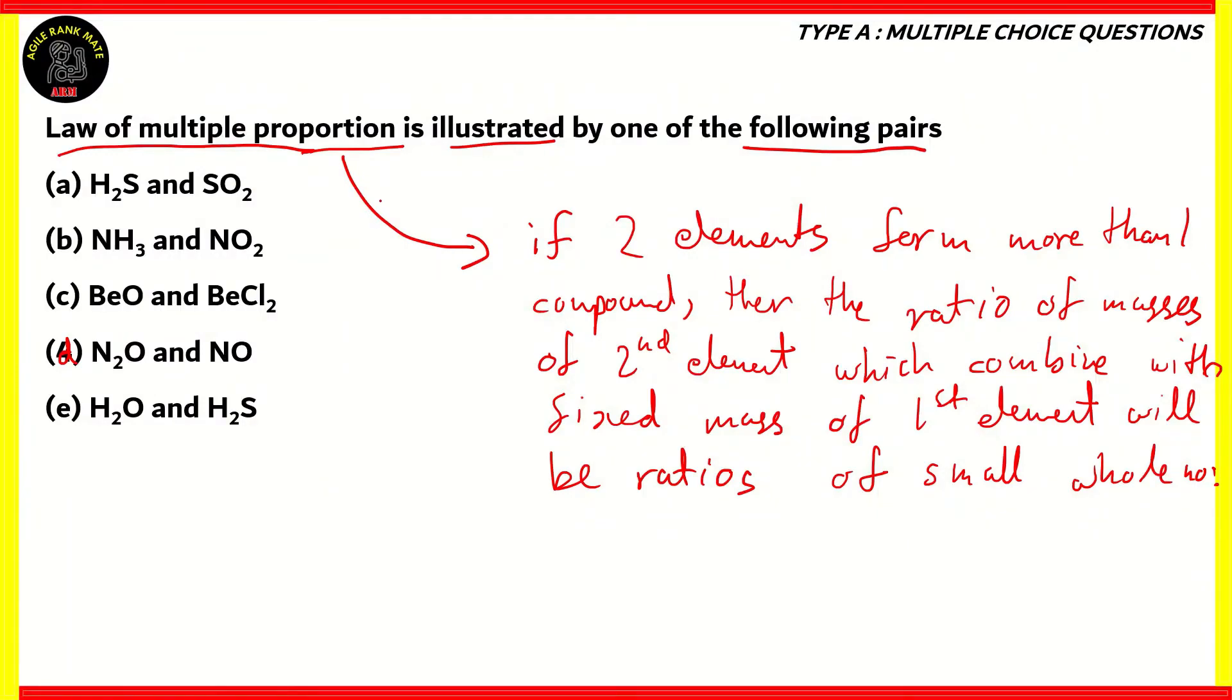So again, in these options, we need to find the pair where you have two elements in both compounds. However, their composition is different. If we look at option A, it says H2S and SO2, which is incorrect because one compound has hydrogen, the other has oxygen, so which is incorrect. If we look at option B, it says NH3 and NO2. Again, nitrogen is common. However, we have H3 on one and NO2 on the other, which is incorrect. If we look at option E, it says H2O and H2S. Again, oxygen and sulfur are different. So therefore, option E is also incorrect. If we look at option C, it says BeO and BeCl2, oxygen, chlorine, 2-chlorine atoms. That's different. So option C is incorrect.